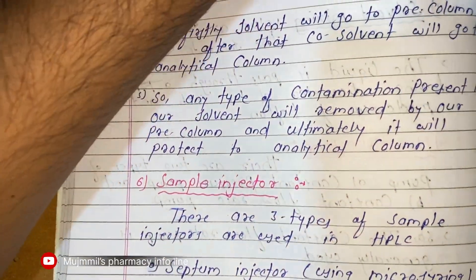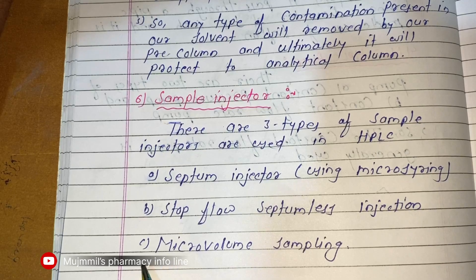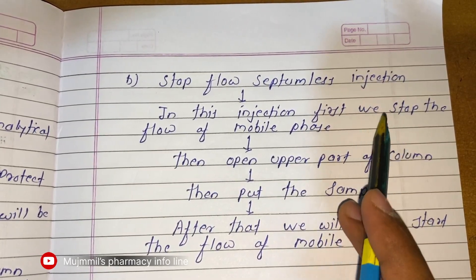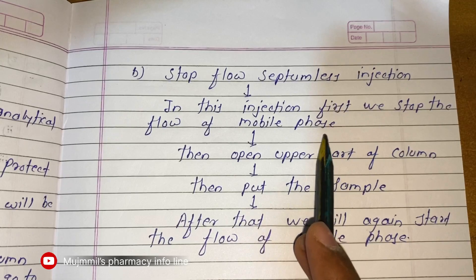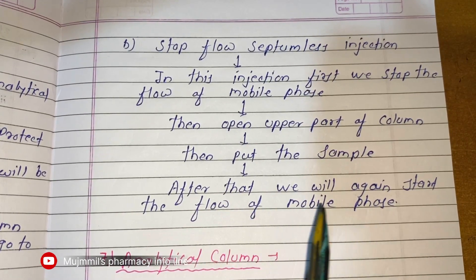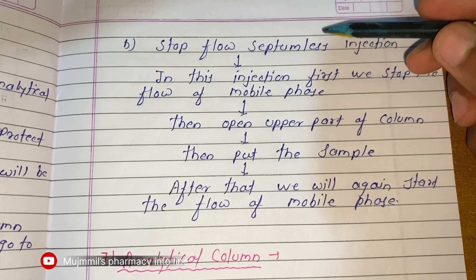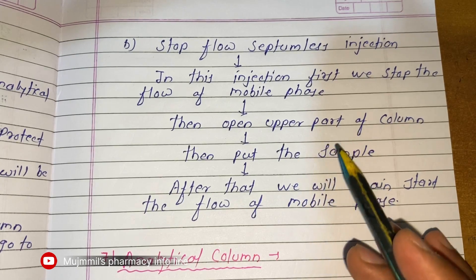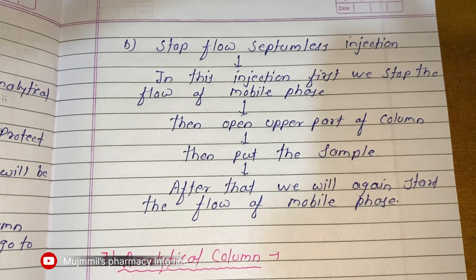There are three types of sample injectors used in HPLC: first, a septum injector using a microsyringe; second, a stop-flow septumless injection; and third, micro-volume sampling. In the stop-flow septumless injection, we stop the flow of mobile phase, open the upper part of the column, put the sample in, and then restart the flow of mobile phase. This is the concept of the sample injector.